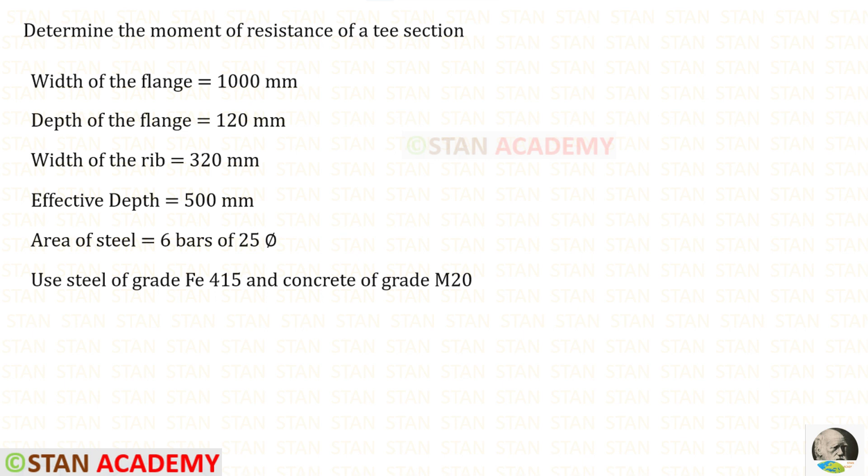Hello everyone. Today we are going to do a problem based on T-beams. Width of the flange is given as 1000 millimeter, depth of the flange is given as 120 millimeter, width of the rib is given as 320 millimeter, and effective depth is given as 500 millimeter. Area of the steel is given as 6 bars of 25 millimeter diameter. Grade of the steel is given as Fe415 and grade of the concrete is given as M20.